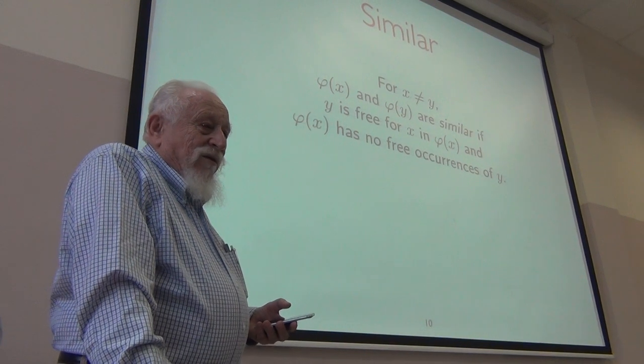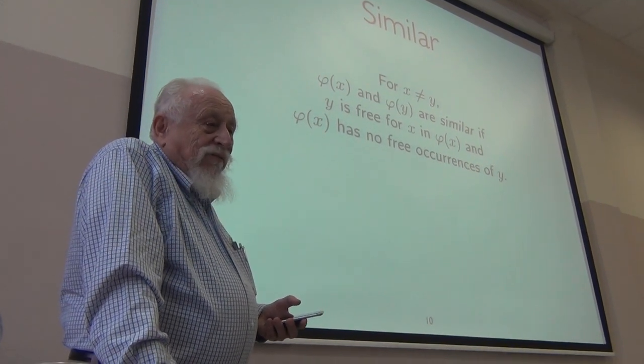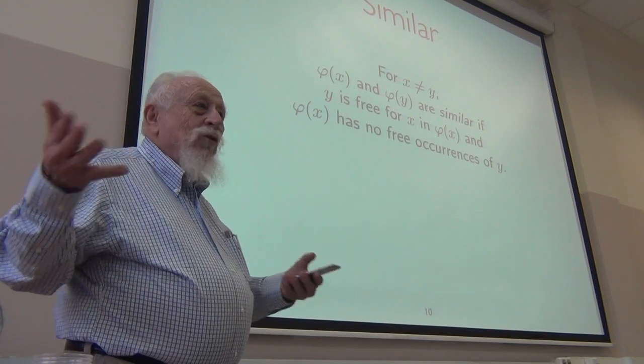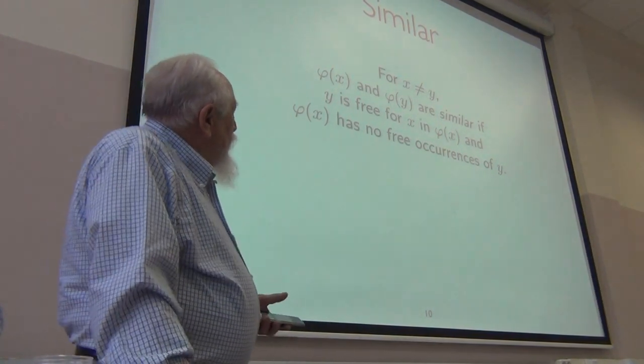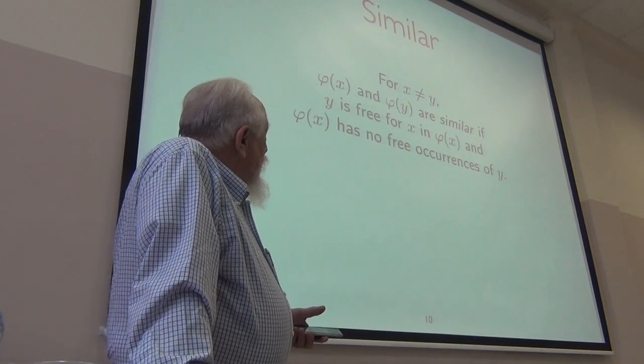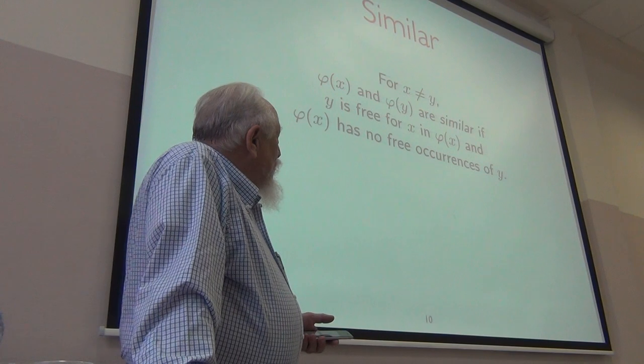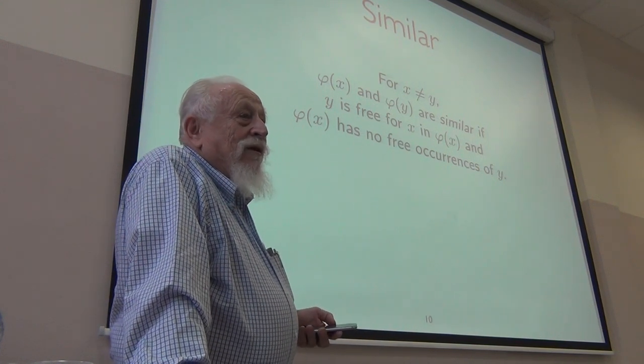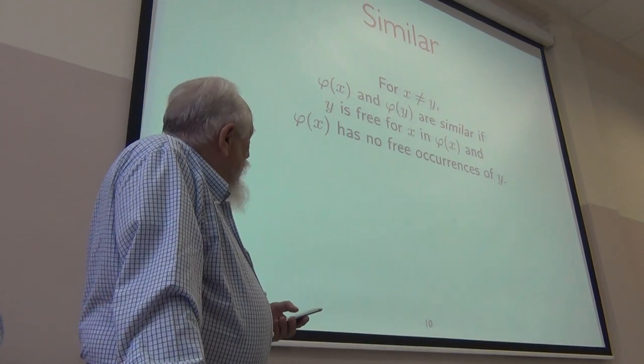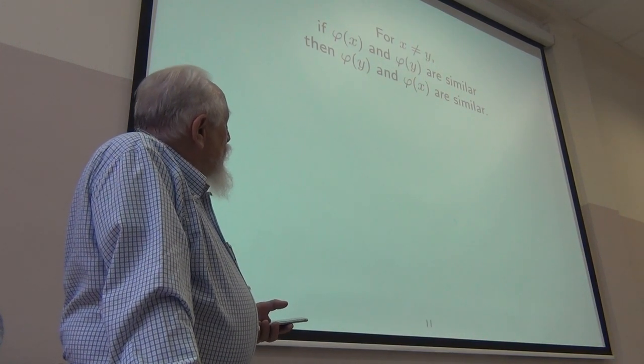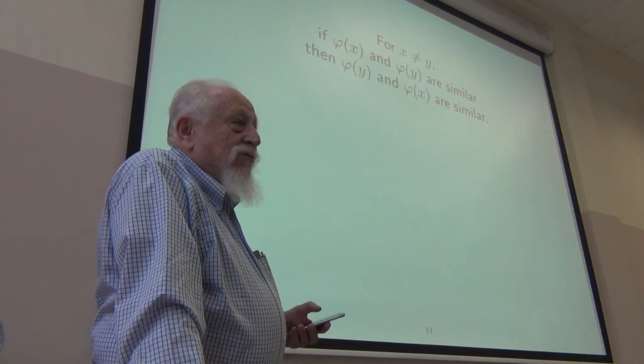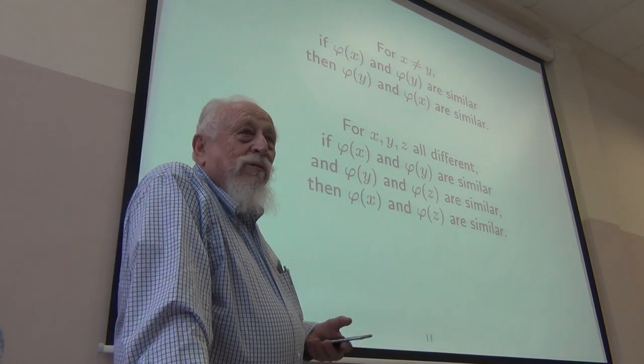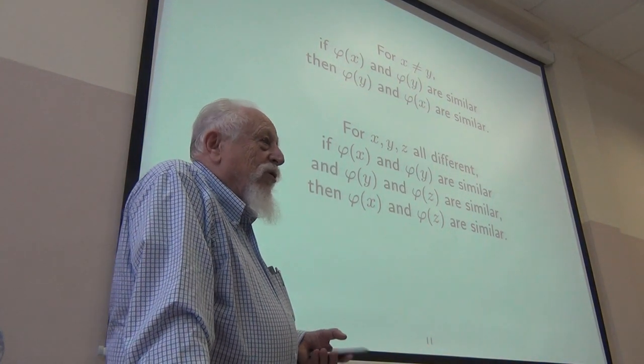And this notion of similarity, I want to work with the notion of quantification and if change of variable isn't going to hurt, you can think of them as really being the same formula where one is in disguise. So, here's a formal definition of that. If x and y are different variables, phi of x and phi of y are similar and other terminology has been used as well. If y is free for x in phi of x and phi of x has no free occurrences of y. That looks a little asymmetric, but in fact it isn't. If phi of x and phi of y are similar, phi of y and phi of x are similar, so it's a symmetric relation. It's a transitive relation. So, essentially I won't distinguish between similar formulas. They all express the same things.